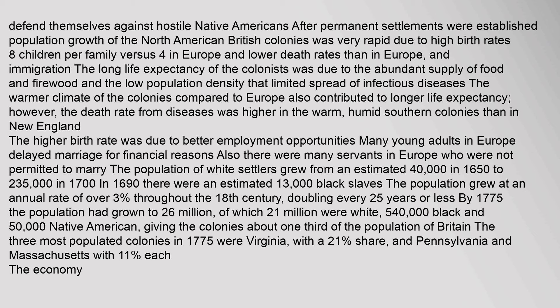After permanent settlements were established, population growth of the North American British colonies was very rapid due to high birth rates — 8 children per family versus 4 in Europe — lower death rates, and immigration. The long life expectancy of the colonists was due to the abundant supply of food and firewood and the low population density that limited spread of infectious diseases. The population of white settlers grew from an estimated 40,000 in 1650 to 235,000 in 1700. By 1775 the population had grown to 2.6 million, of which 2.1 million were white, 540,000 black and 50,000 Native American, giving the colonies about one-third of the population of Britain.